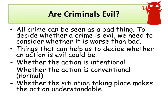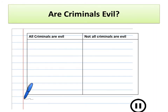Whether the action is conventional — is it a normal thing to have taken place, or something you wouldn't expect? And whether the situation makes the action understandable — does the situation a person is in make their action something you can completely understand? In a table on your piece of paper, write down three reasons why you would say that all criminals are evil and three reasons why not all criminals are evil. Pause the video now and when you've got six reasons, play the video again.